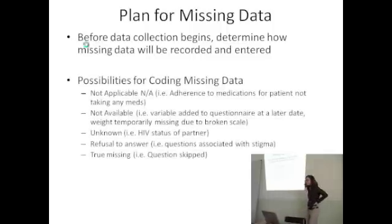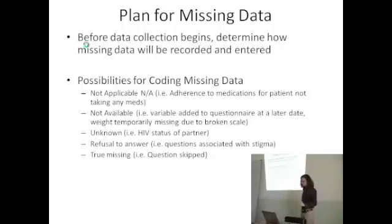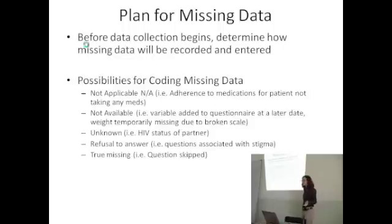Some of the possibilities for coding missing data are to have special missing data values. For example, you could have 'not applicable' — you could actually have that on the form as a response. If you're asking about pregnancy, you could have yes, no, not applicable, and you would expect all the male patients to have NA ticked. Another example is adherence to medications: if a patient is not taking any medications, then that question is really not applicable, so you could have a response category of 'not applicable.'